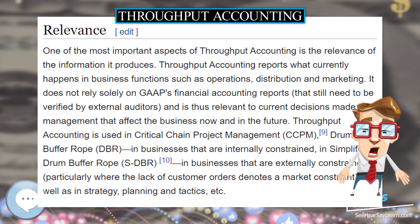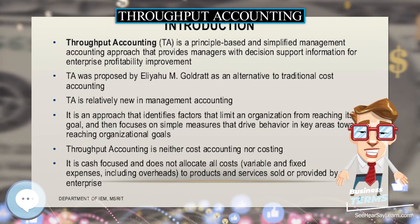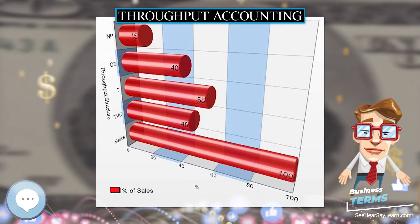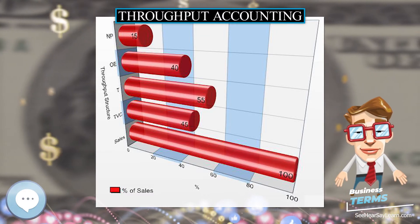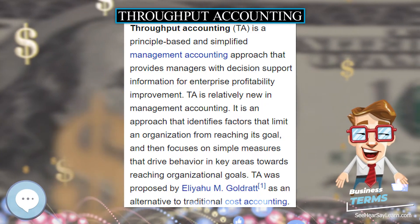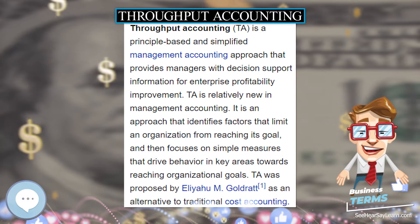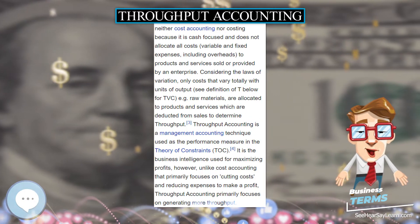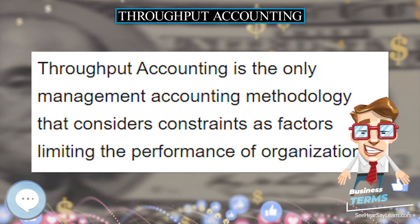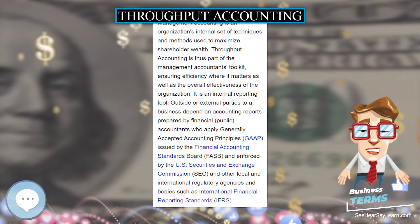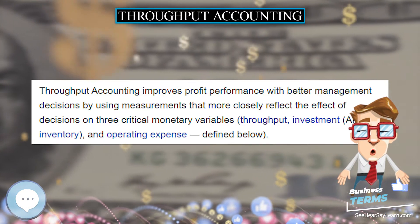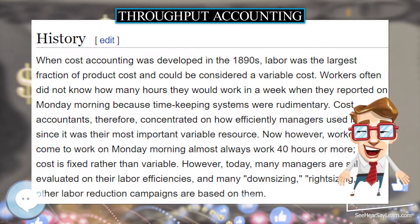Throughput accounting uses three measures of income and expense. Organizations that wish to increase their attainment of the goal should require managers to test proposed decisions against three questions. The answers to these questions determine the effect of proposed changes on system-wide measurements. These relationships between financial ratios as illustrated by Goldratt are very similar to a set of relationships defined by DuPont and General Motors financial executive Donaldson Brown about 1920. Brown did not advocate changes in management accounting methods, but instead used the ratios to evaluate traditional financial accounting data.